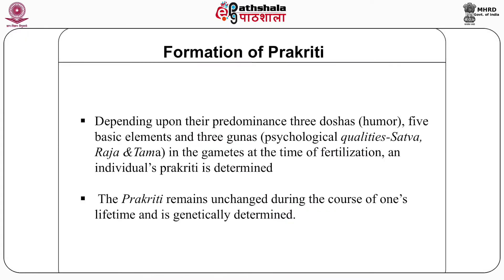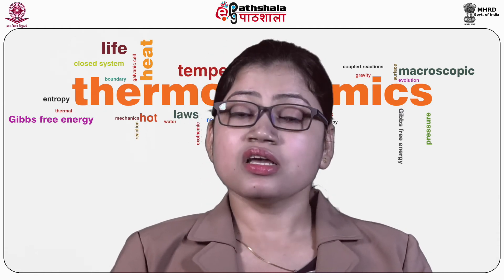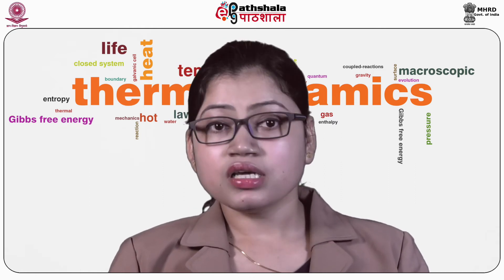Prakriti is formed based on the three dosas, the five basic elements (Panch Mahabhuta), and the three gunas — the psychological qualities that are sattva, rajas and tamas — which exist in every human being. Depending upon their preponderance in the gametes at the time of fertilization, an individual's Prakriti is determined. The body constitution is fixed at the time of fertilization and Prakriti generally remains constant throughout the life of the individual. Thus, the Prakriti, which is the substratum of the universe, is related to the biological constitution of a person.